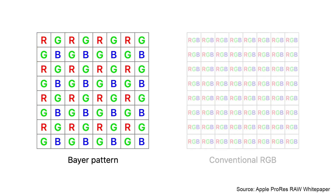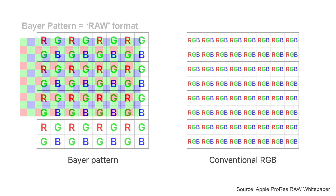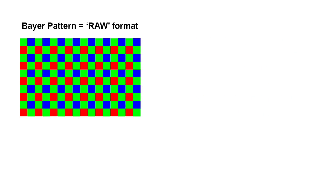In contrast, conventional RGB images consist of not one, but three primary color values — red, green, and blue — at each pixel location. And that is basically what our displays expect: a red, green, and blue value for each pixel. So whenever a file is storing mosaic data like a Bayer pattern, it can be described as a true RAW format.